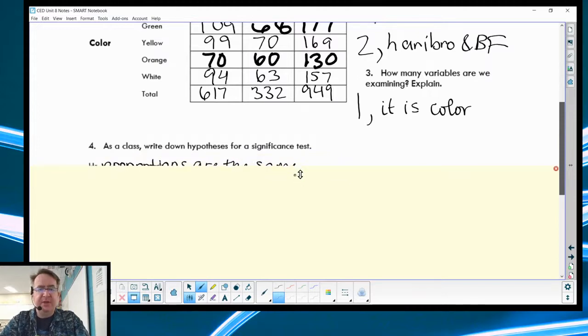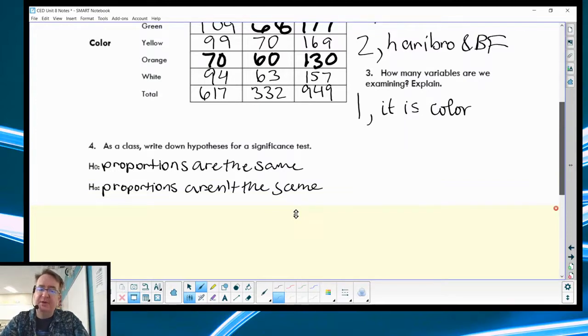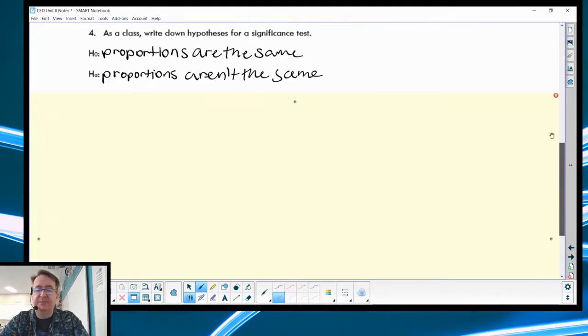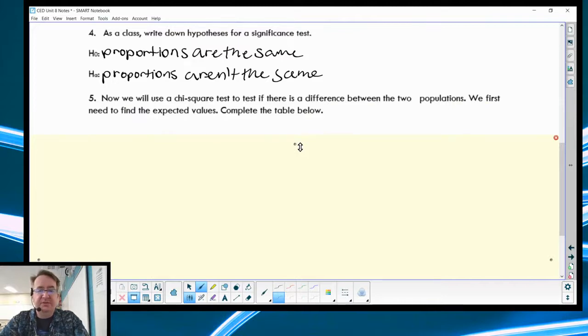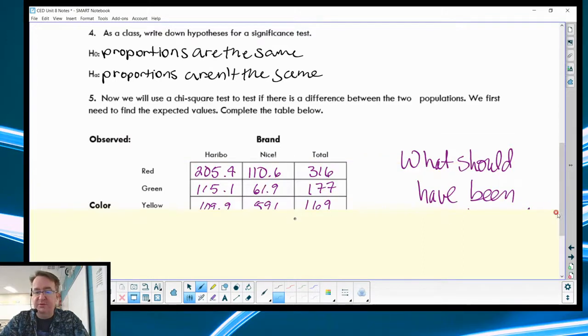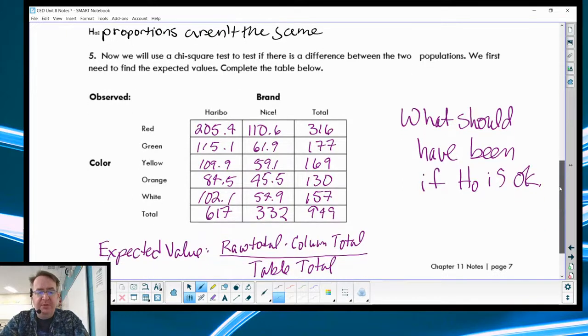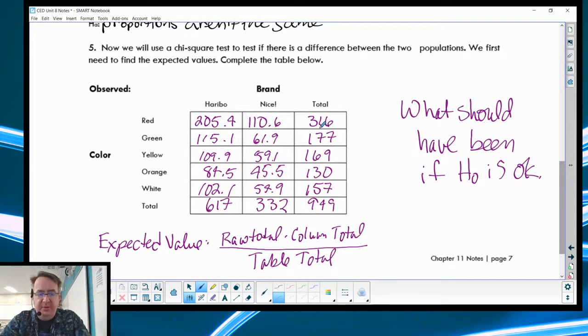The first thing students noticed is that the Black Forest bags had a lot less, about half the number of gummy bears as Haribo did. But students made it up because they're organic. Here's our data. How many samples do we have? Two samples. We're measuring color distribution. Side note to teachers, if you're going to do this, Black Forest has a lot of the same colors, so use something else.